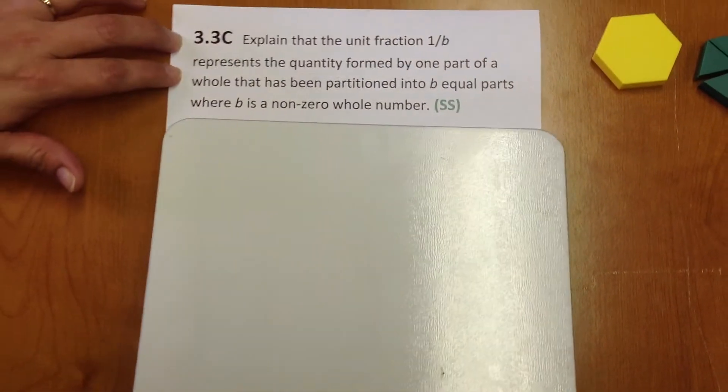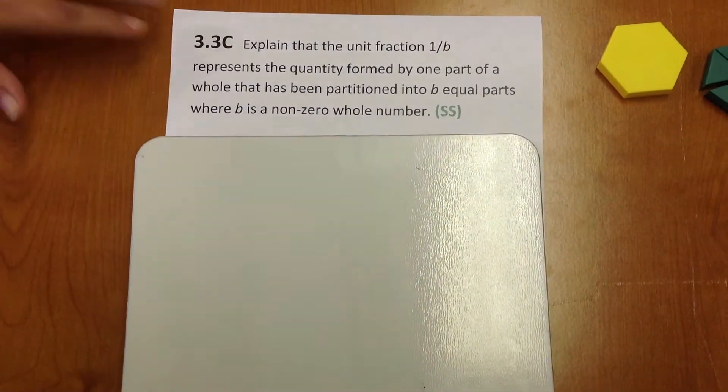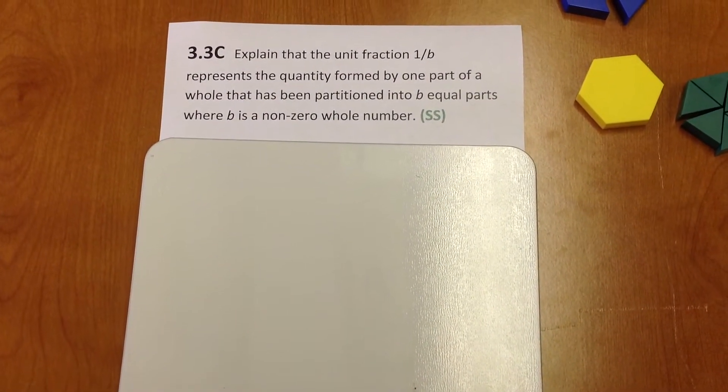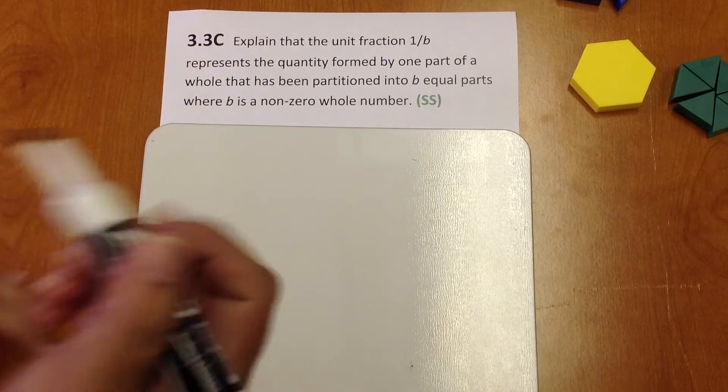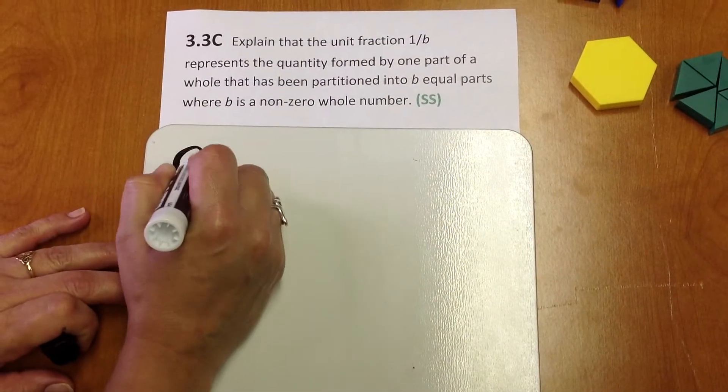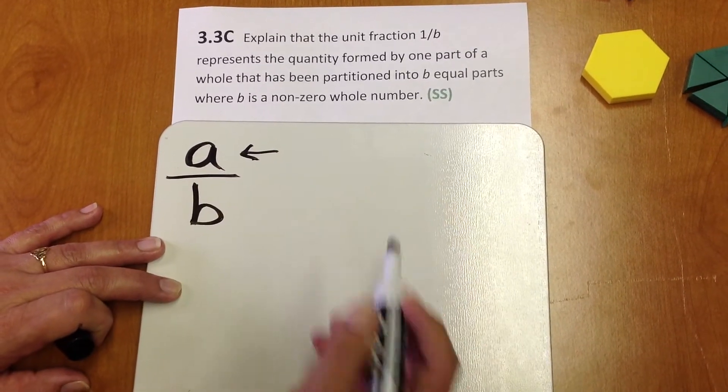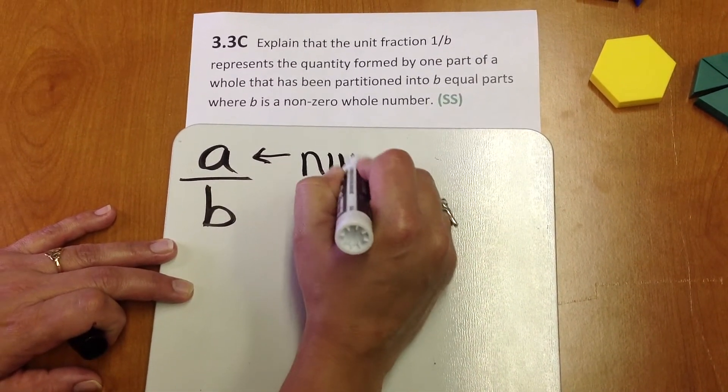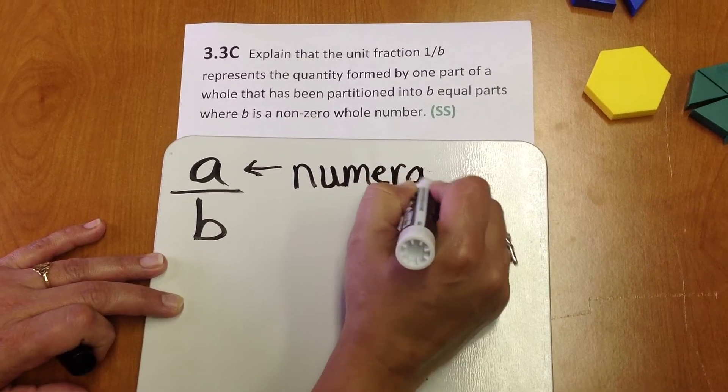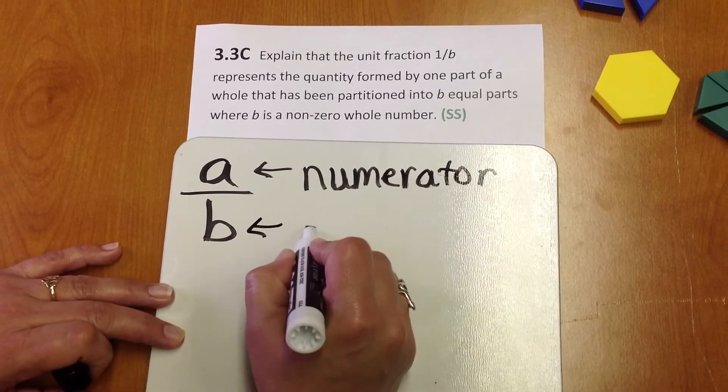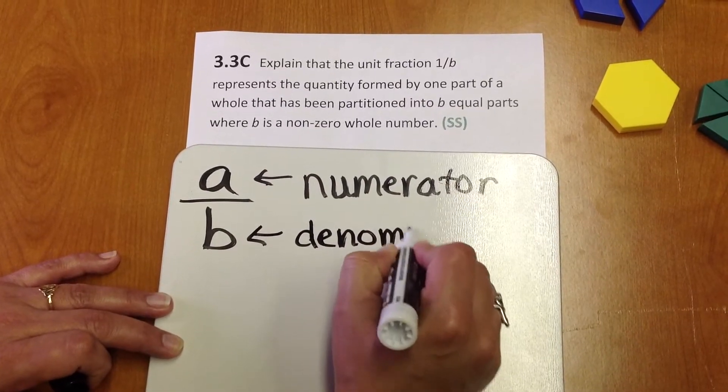Let's take a moment and break down this standard to make sure that we all understand it correctly. First, let's review some key vocabulary related to fractions. In a fraction, the number above the fraction bar is called a numerator. The number below the fraction bar is called a denominator.